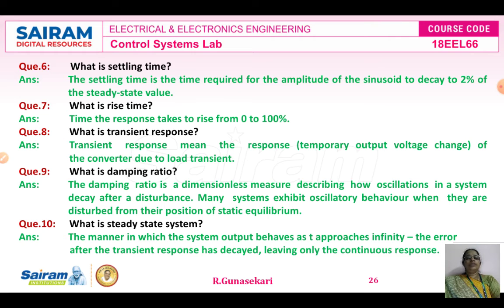What do you mean by steady state? A control system response consists of two parts: the transient response and the steady state response. The steady state response is the system output behavior as t approaches infinity - that is, the error after the transient response has decayed, leaving only the continuous response.